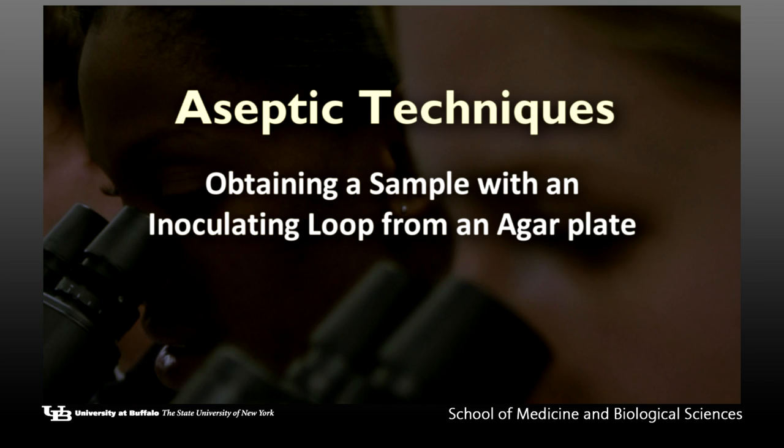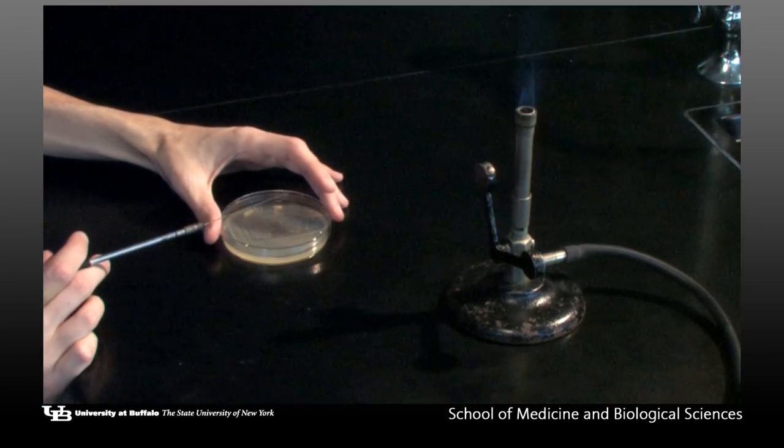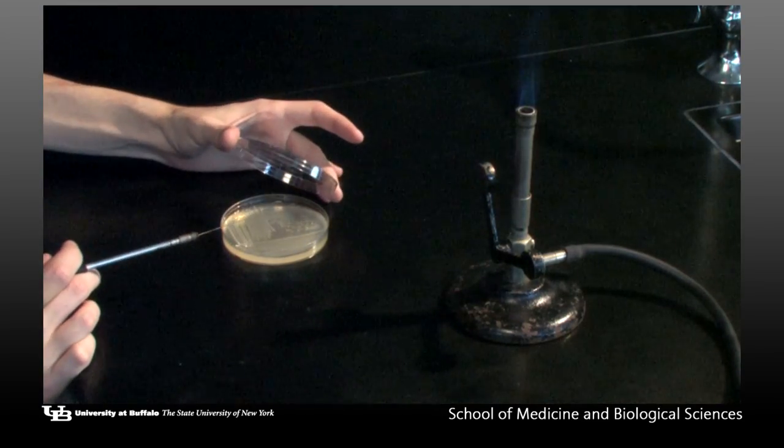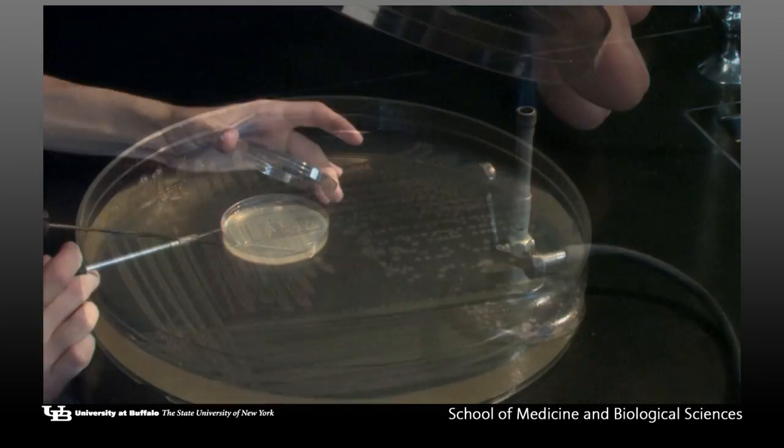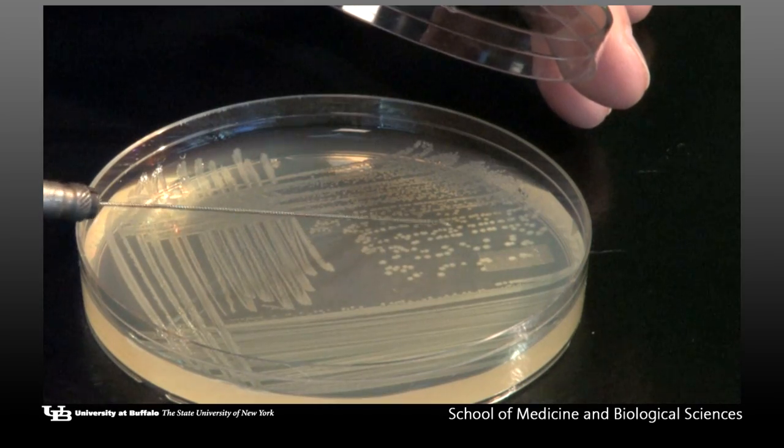Obtaining a sample with an inoculating loop from an agar plate. Flame the loop. Lift the lid of the agar plate but continue to use it as a cover to prevent contamination from above. Touch the loop to an uninoculated portion of the plate to cool it.